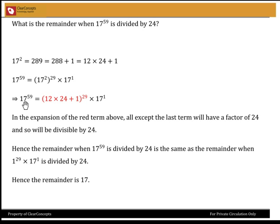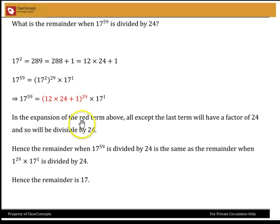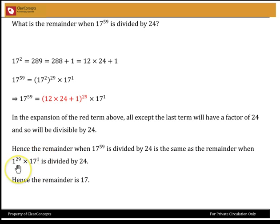So 17 to the power 59 can be written as 12 times 24 plus 1, whole to the power 29, times 17 to the power 1, where we expressed 17 squared as 12 times 24 plus 1. This is a binomial expression, so all except the last term will have a factor of 24 and will be divisible by 24. Therefore the remainder when 17 to the power 59 is divided by 24 is the same as the remainder when 1 to the power 29 times 17 to the power 1 is divided by 24. You can readily see that the remainder is 17.